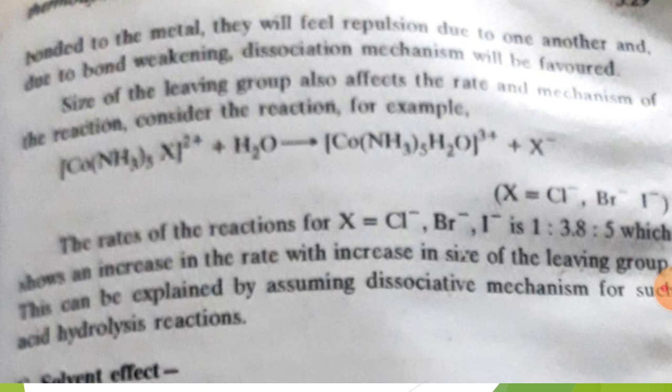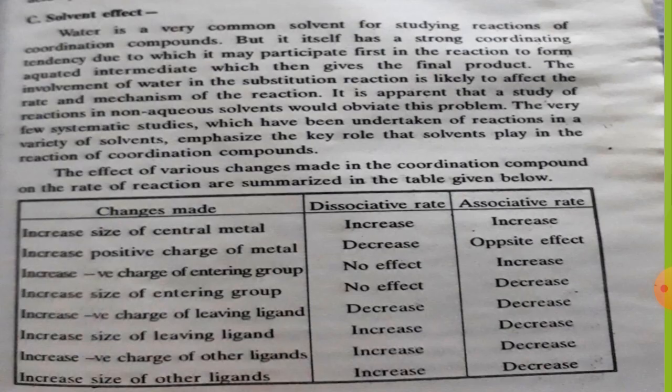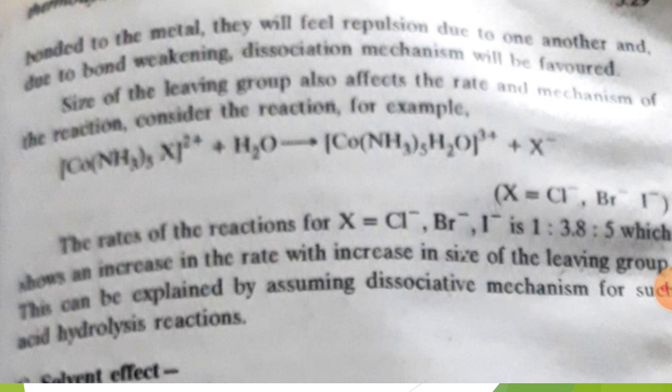Size of the leaving group also affects the rate and mechanism of the reaction. Consider the example shown here on the screen. The rate of the reaction for X equals Cl, Br, I is in the ratio 1:2:3.8:5, which shows an increase in the rate with increase in size of the leaving group. This can be explained by assuming dissociative mechanism for such acid hydrolysis reactions.